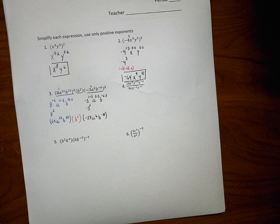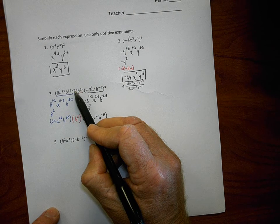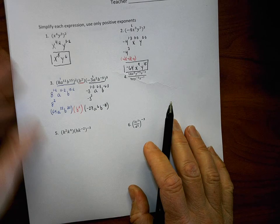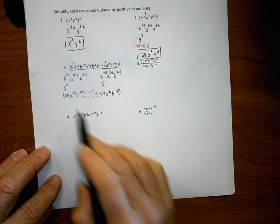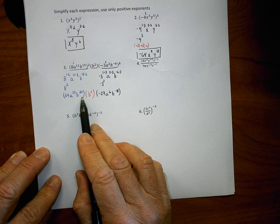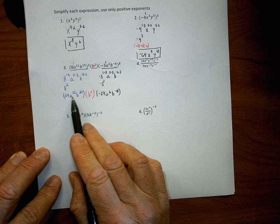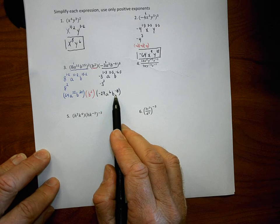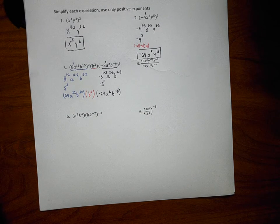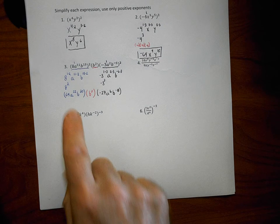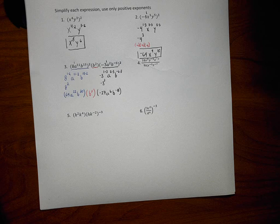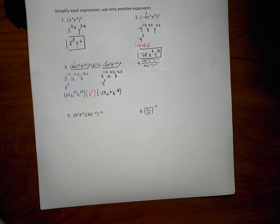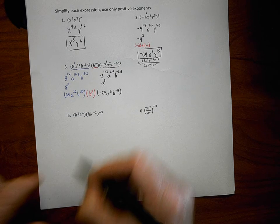Now I'm going to use the product rule — the multiplication rule of exponents — because the problem is now asking me to multiply everything together. I take the coefficients 64 and negative 27 and multiply them together. 64 times negative 27 gives me negative 1728.